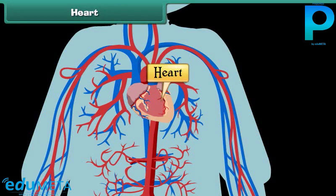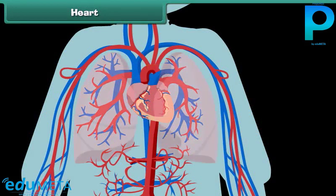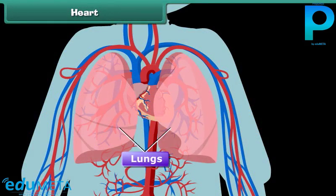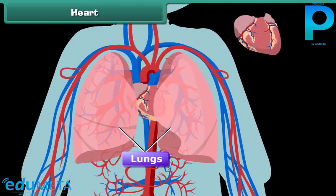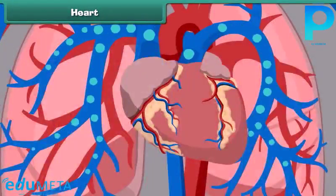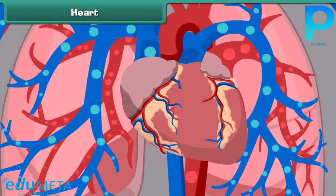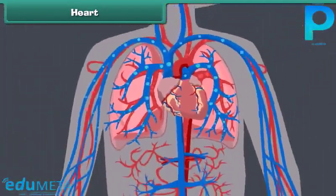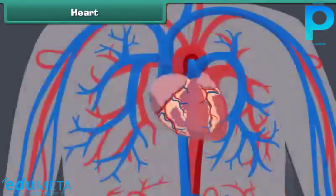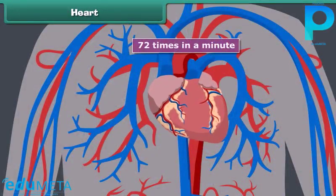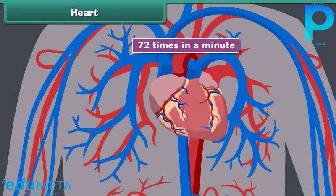The human heart is located in the chest cavity between the two lungs, a little to the left of the center of the body. It is conical in shape and approximately the size of a person's clenched fist. The heart is a bag of muscles responsible for pumping blood filled with oxygen and other nutrients throughout the body. The human heart beats 72 times per minute and works continuously without getting tired.